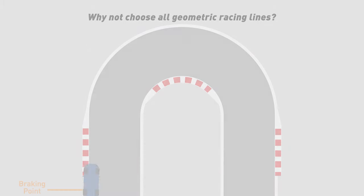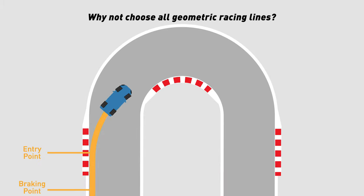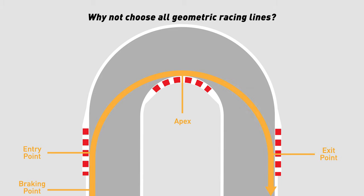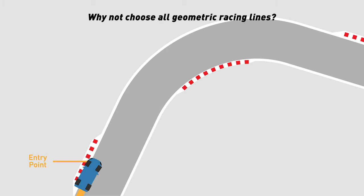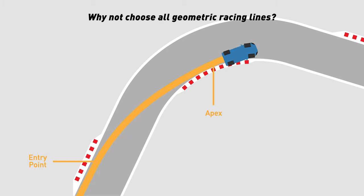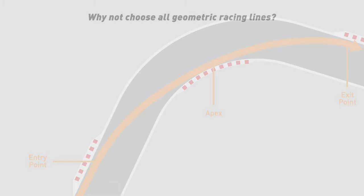So since the geometric racing line goes the fastest through corners, is it possible to pursue the geometric racing line for each corner so that the car can make the fastest lap? The answer is negative.